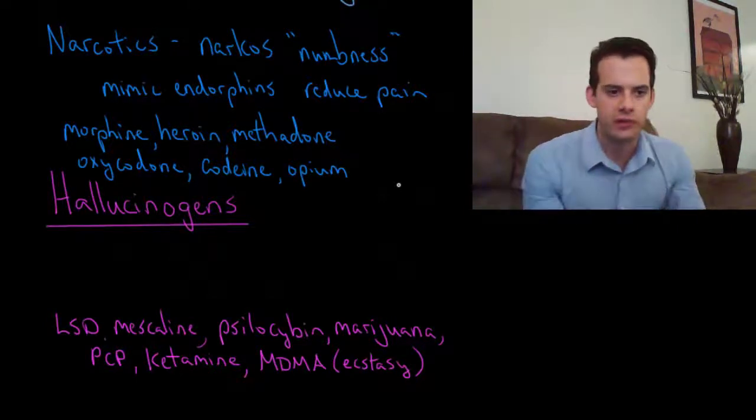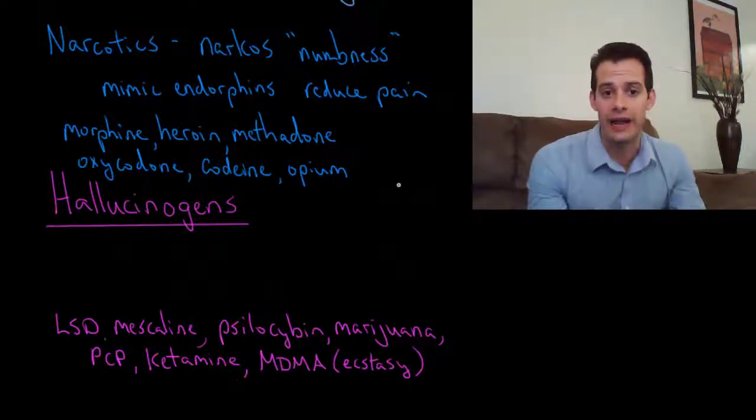Narcotic drugs would include morphine, heroin, methadone, oxycodone, codeine, and opium, which is where we get the term opiates and opioids.